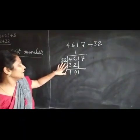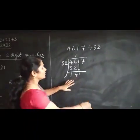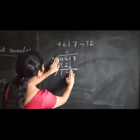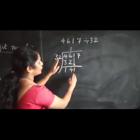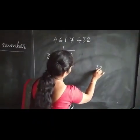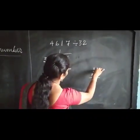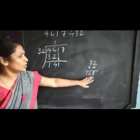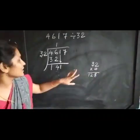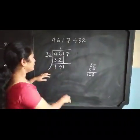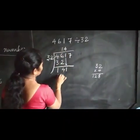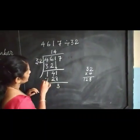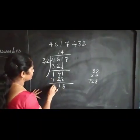Bring down the next number: 141. How many 32s are there in 141? Use the same method: close the last digit of each number. How many 3s are in 14? 3 fours are 12, so we try 32 × 4. 2 fours are 8, 3 fours are 12 — we get 128. 128 is less than 141, so 32 fours are 128. 11 minus 8 is 3, 3 minus 2 is 1, 1 minus 1 is 0.